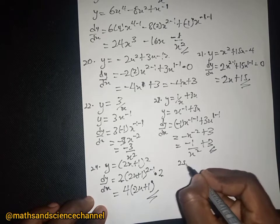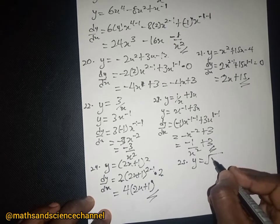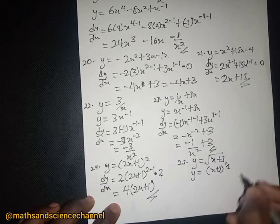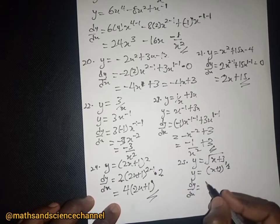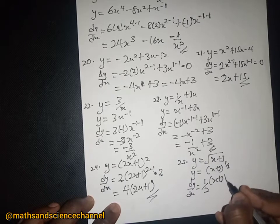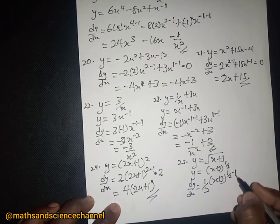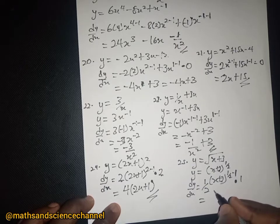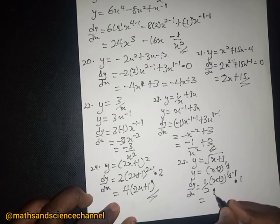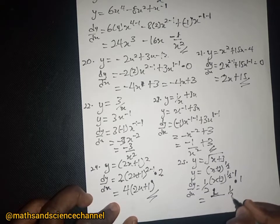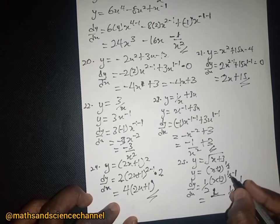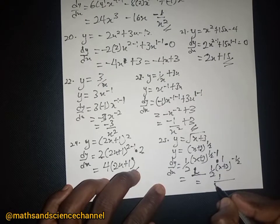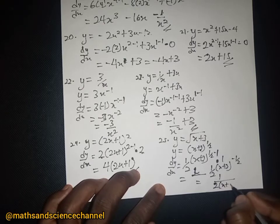Example 25: y equal to the square root of (x plus 3), which we write as (x plus 3) to the power 1/2. The dy/dx is — we drop the 1/2 and write (x plus 3) to the power 1/2 minus 1, then differentiate x plus 3 which is 1 — so we get 1 over 2 times (x plus 3) to the power negative 1/2, which is 1 divided by 2 times the square root of (x plus 3).